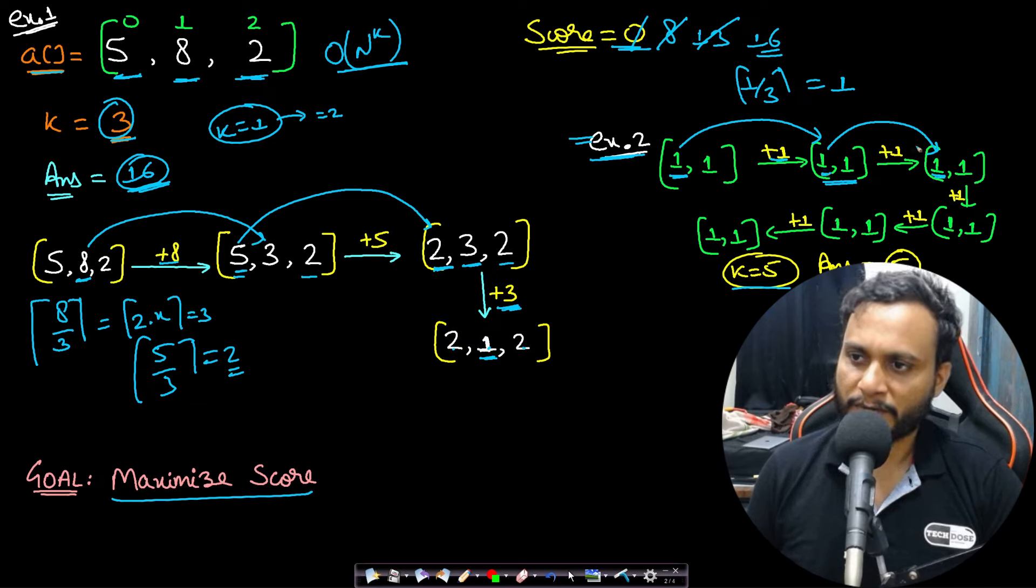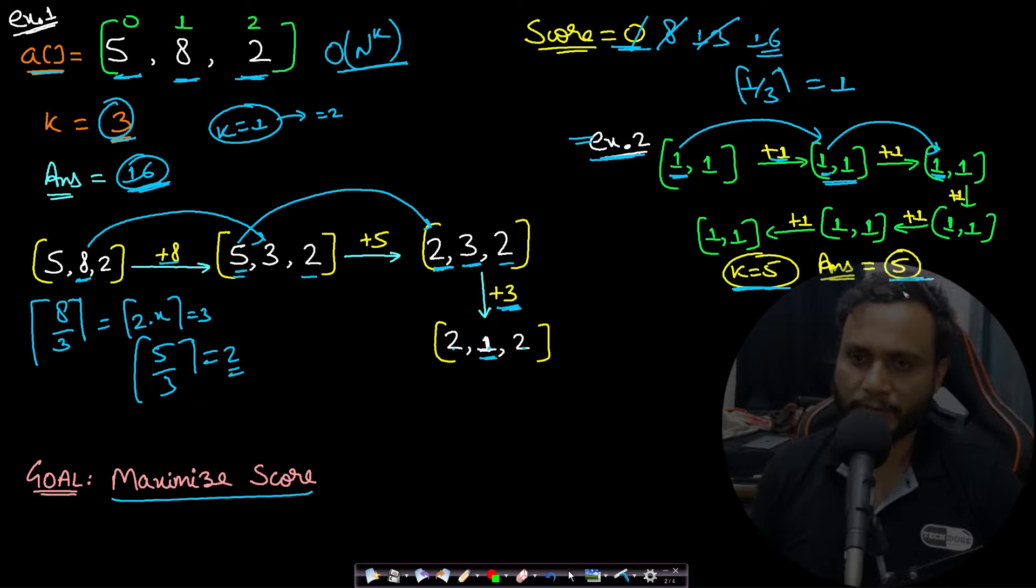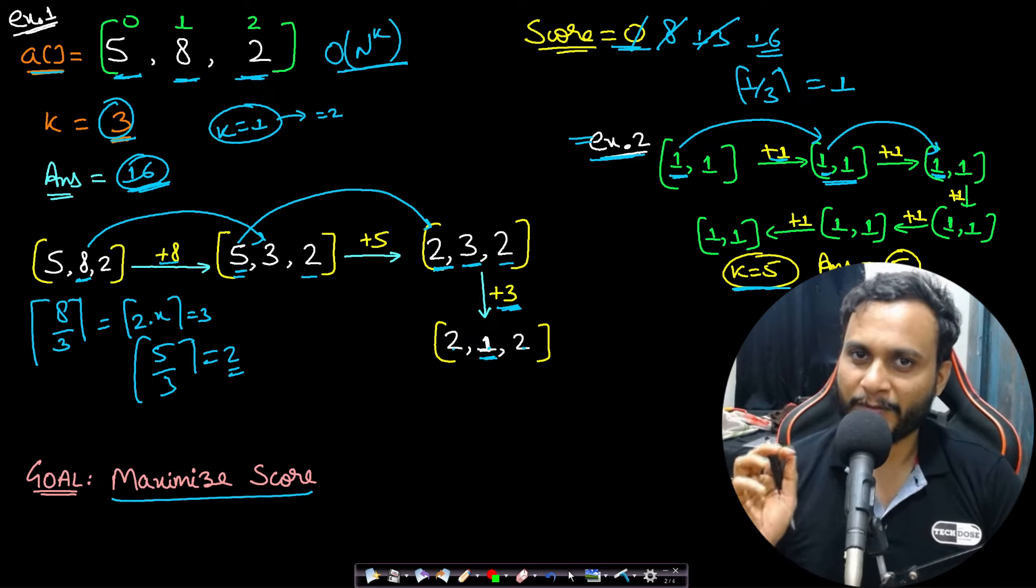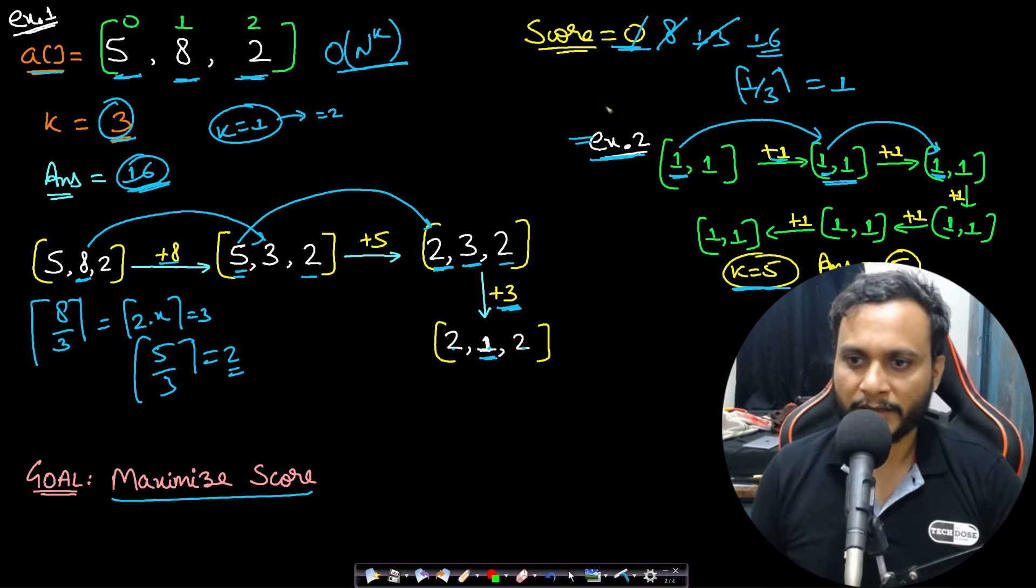This [1,1] will always remain and k number of times we will do the operation, so the maximal score will be 5. Since the constraint already mentioned that we will have at least one element in the array and whatever the value of k, you will never run out of items because no item will be reduced to 0 if it is not already 0 because of the ceiling function.